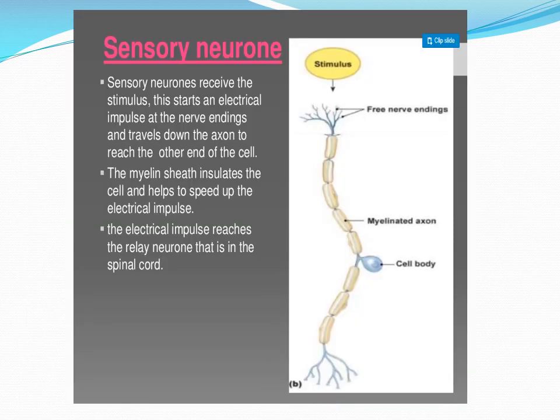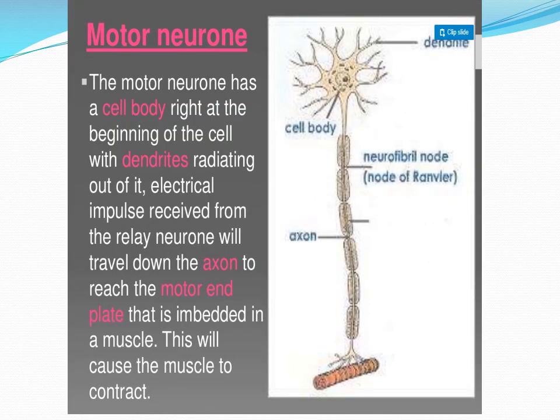In more detail on sensory neurons: they receive stimuli, taking impulses along the axon to the nerve ending and to the cell body. A myelin sheath is present around these nerves, which helps speed up the electrical impulses. The impulse then reaches the relay neurons in the spinal cord. For motor neurons, the cell body has dendrons radiating outward; impulses received from relay neurons travel along the axon and reach the motor end plate, which is embedded in the muscles, causing the muscle to respond.